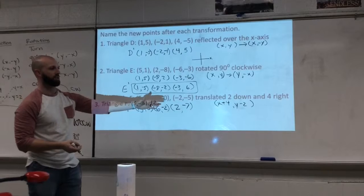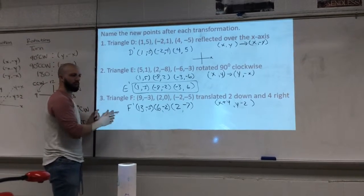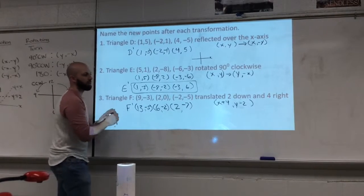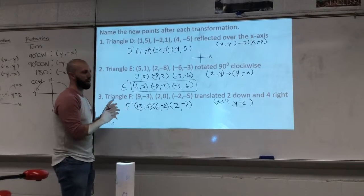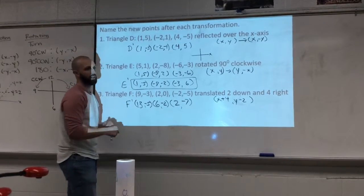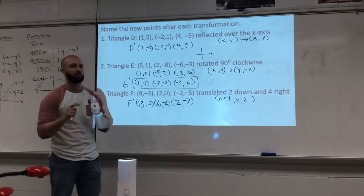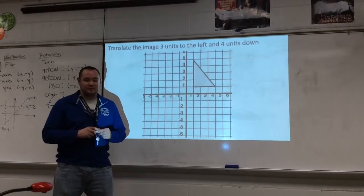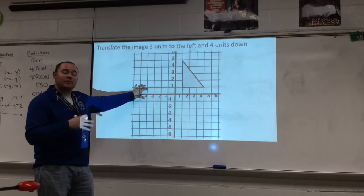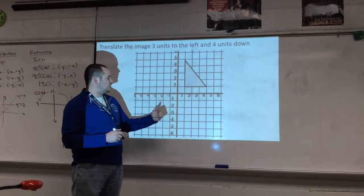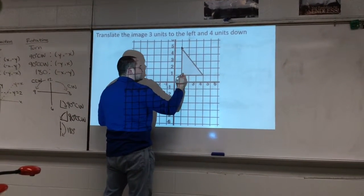If you needed to, you could always draw the graph, plot the points, and then move it if you don't know the rule. You could always go back to graphing it first. And that's going to be what Ms. Garner talks about next. So to finish up transformations, we're going to go over how to create the image from the pre-image. Here we have a triangle, and I'm going to label these points A, B, and C.